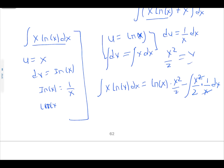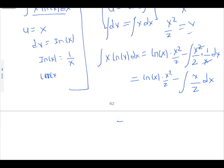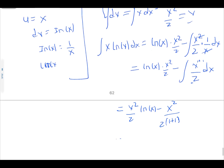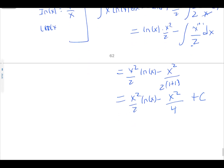We can simplify (x²/2)·(1/x) = x/2, so the expression becomes ln(x)·(x²/2) minus the integral of x/2 dx. This is easy to integrate, giving a final answer of (x²/2)·ln(x) minus x²/4, since integrating x/2 gives x²/4 (power becomes 1+1=2, times the 2 already in the denominator gives 4).